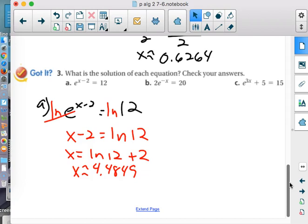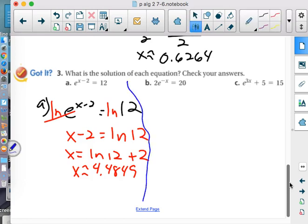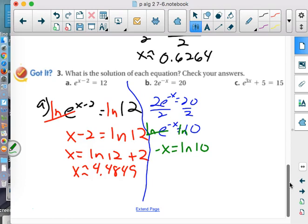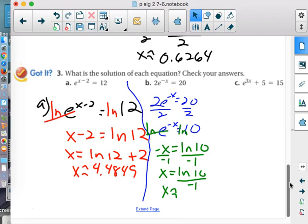Natural log of 12 and add 2. 4.4849. Here's my base raised to a power. Natural log. B's going to take a little bit of work before we can do natural log. But just a little bit. What do we do? Divide by 2. Got to be e to the blah blah blah. 20 divided by 2 is 10. So what's next? LN. This will drop out. Negative x equals natural log of 10. So how are we going to get x? Divide by negative 1. Negative 2.3026.